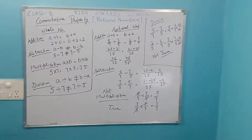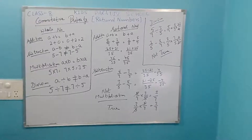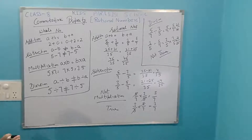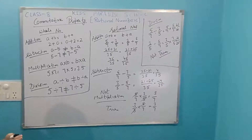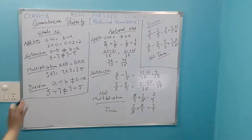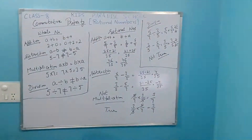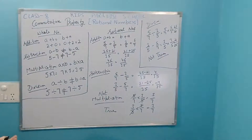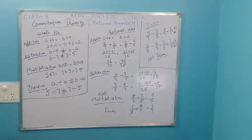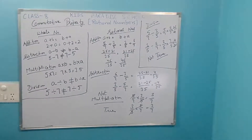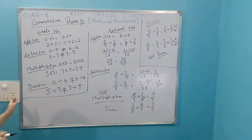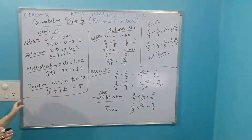Closure property applies to whole numbers, rational numbers, and integers. I have noted that natural numbers, whole numbers, and integers all come in the category of rational numbers. Even fractions come in the category of rational numbers. So first, I will tell you the closure property.